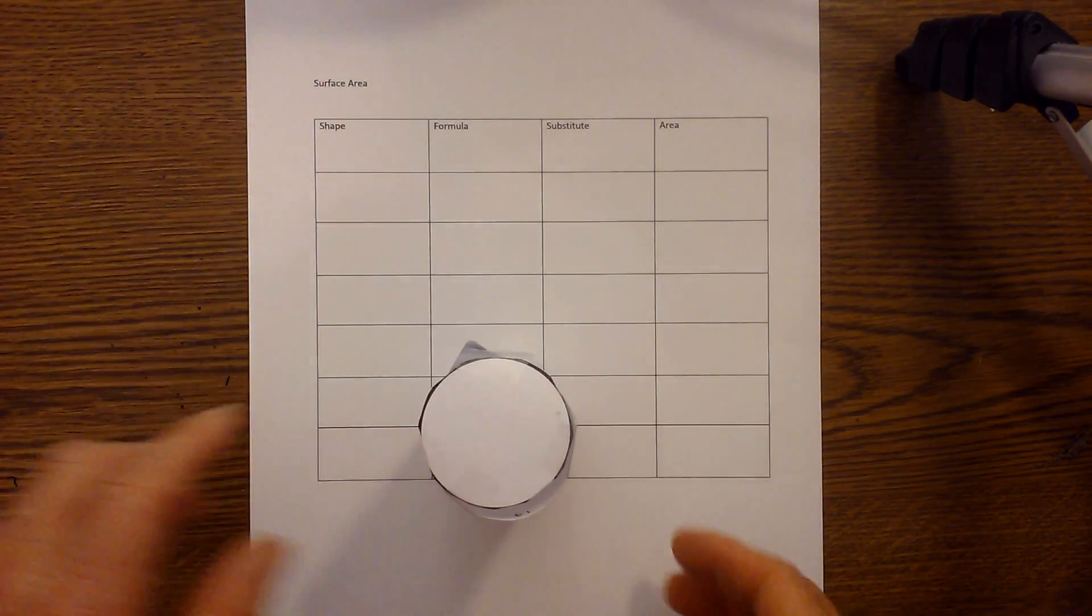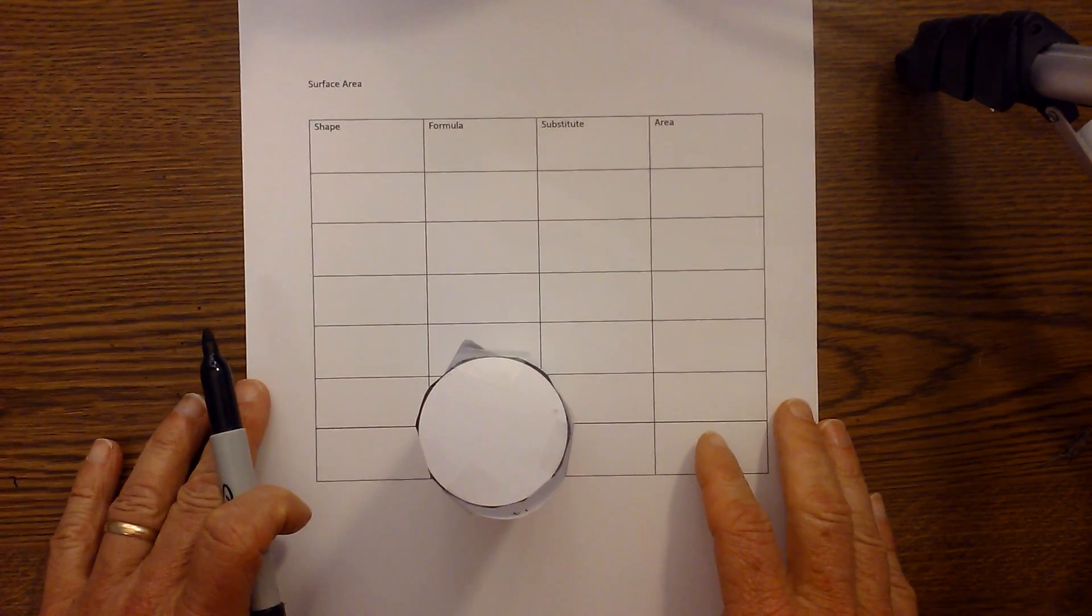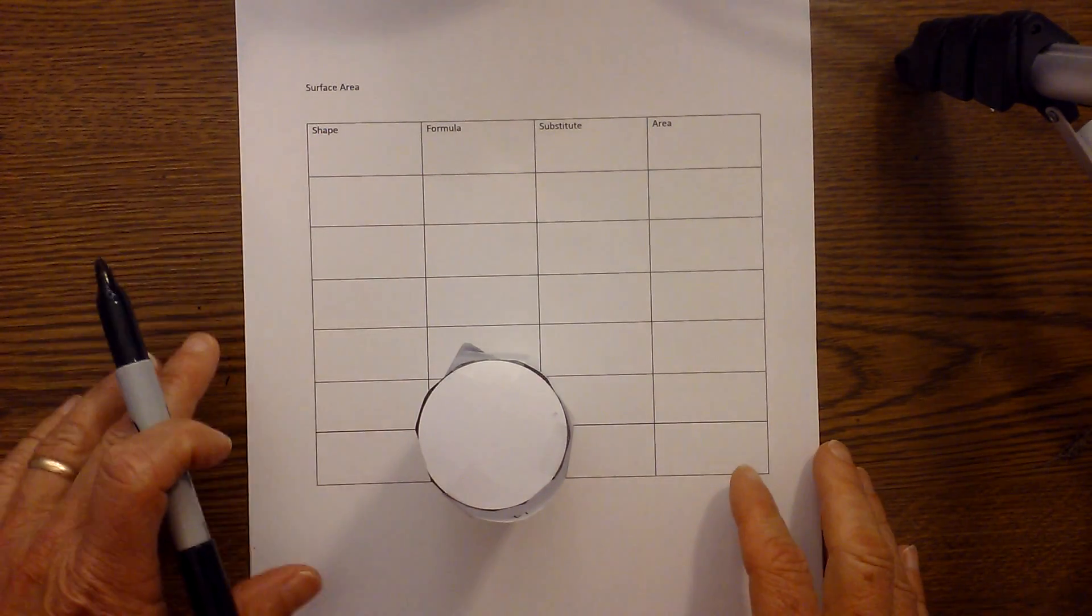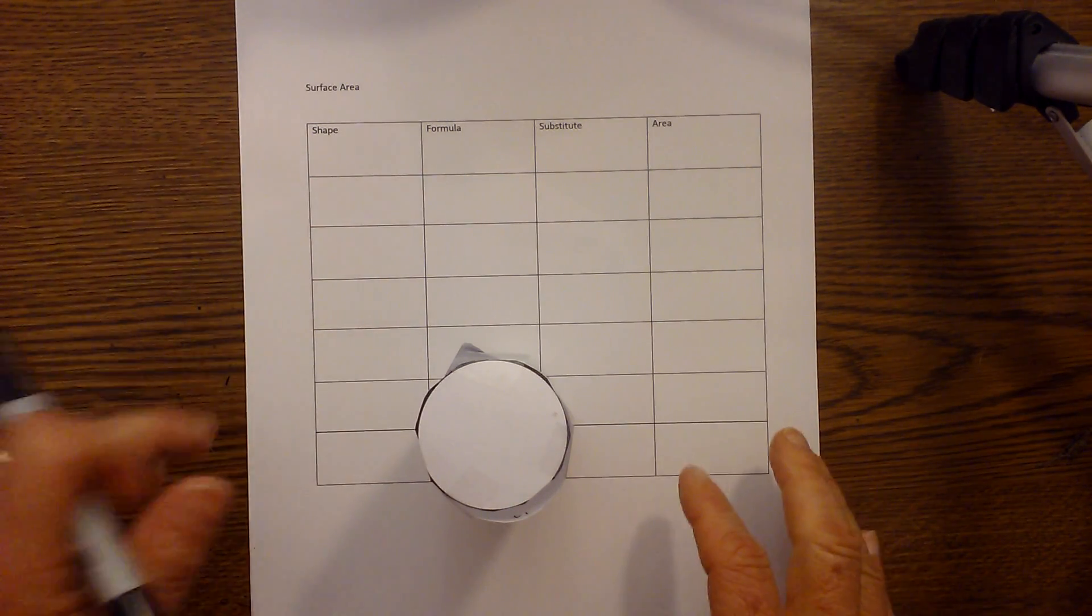First, what I'm going to do is unroll this and use the net so that you can see each part of it. But before that I've got a grid because a lot of times it's confusing as to what all you need to add together.